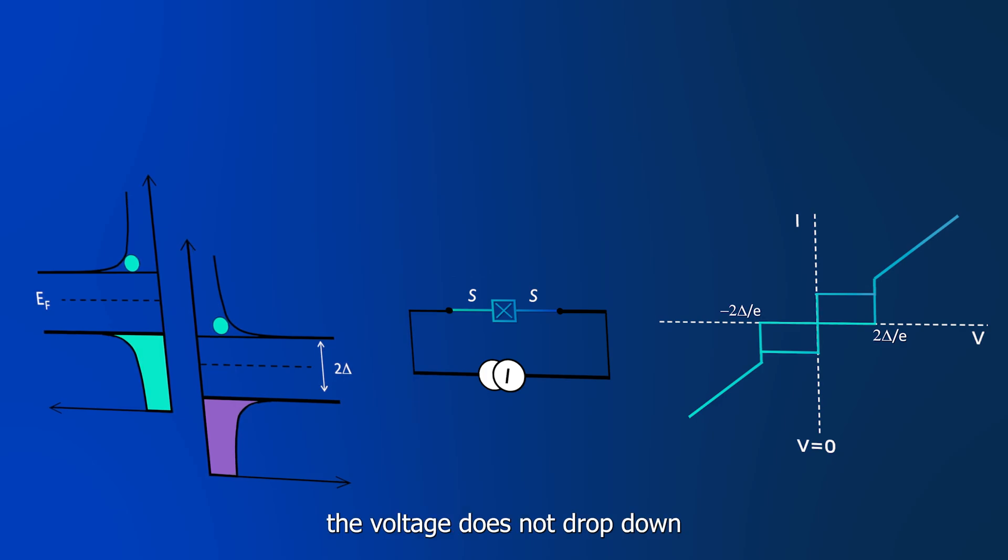As you reach again I sub zero, the voltage does not drop down, but keeps constant at two times the superconducting energy gap, until the current is set back to zero.